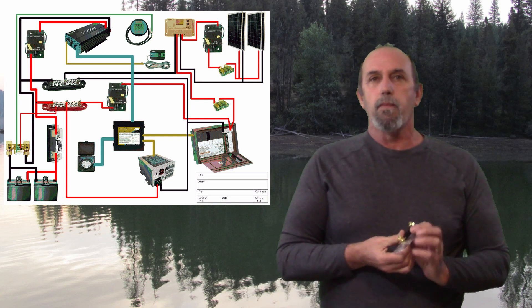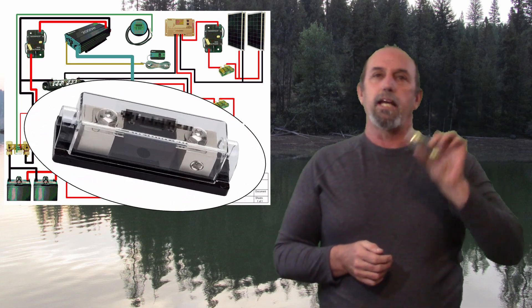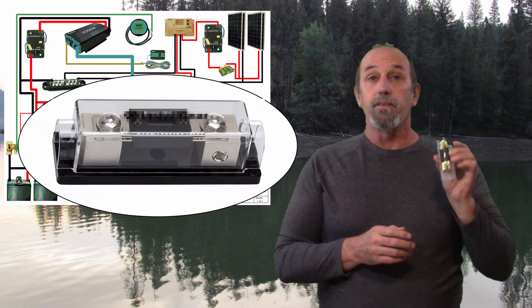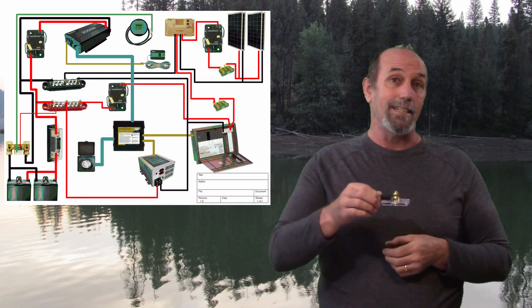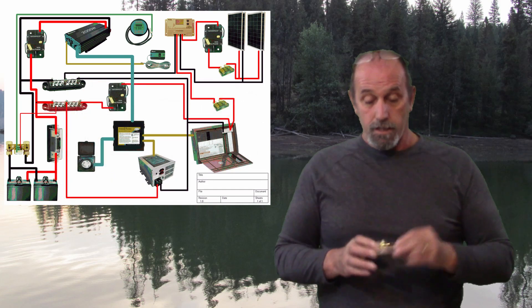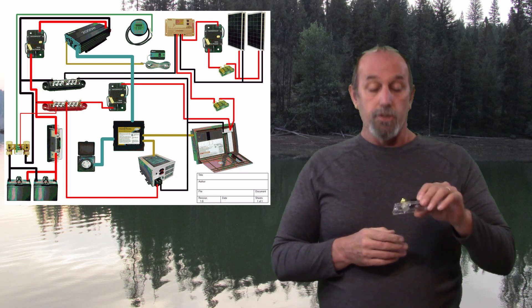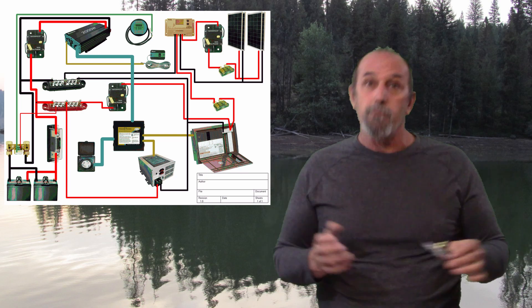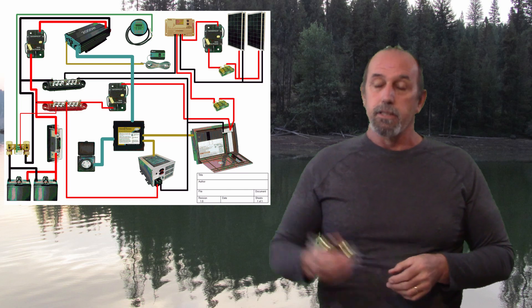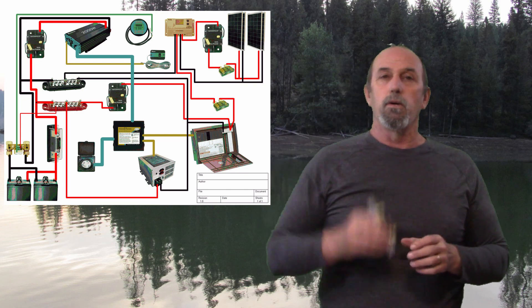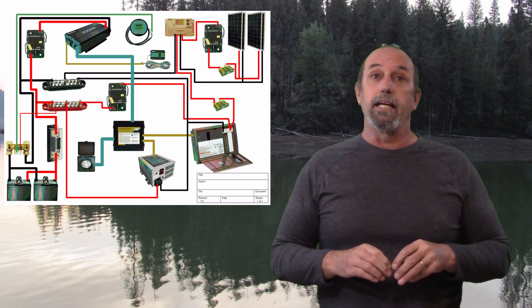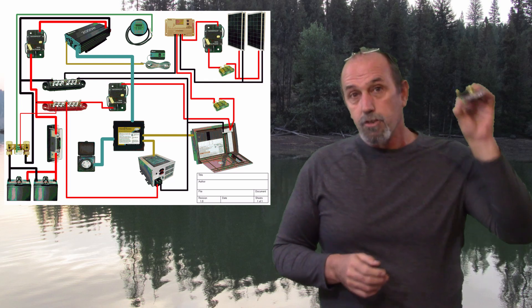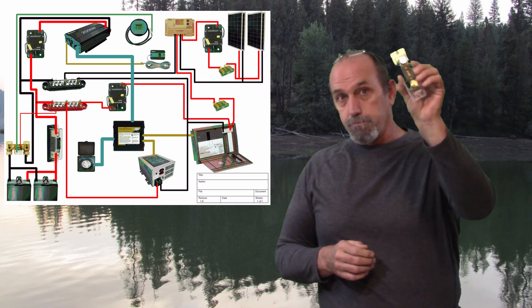First off, I've got a 400 amp ANL fuse. This is going to be our catastrophic protection. This goes within eight inches of our battery positive on our main cable. So if we have a catastrophic failure of our system, this will blow before the batteries fail. So catastrophic failure protection.